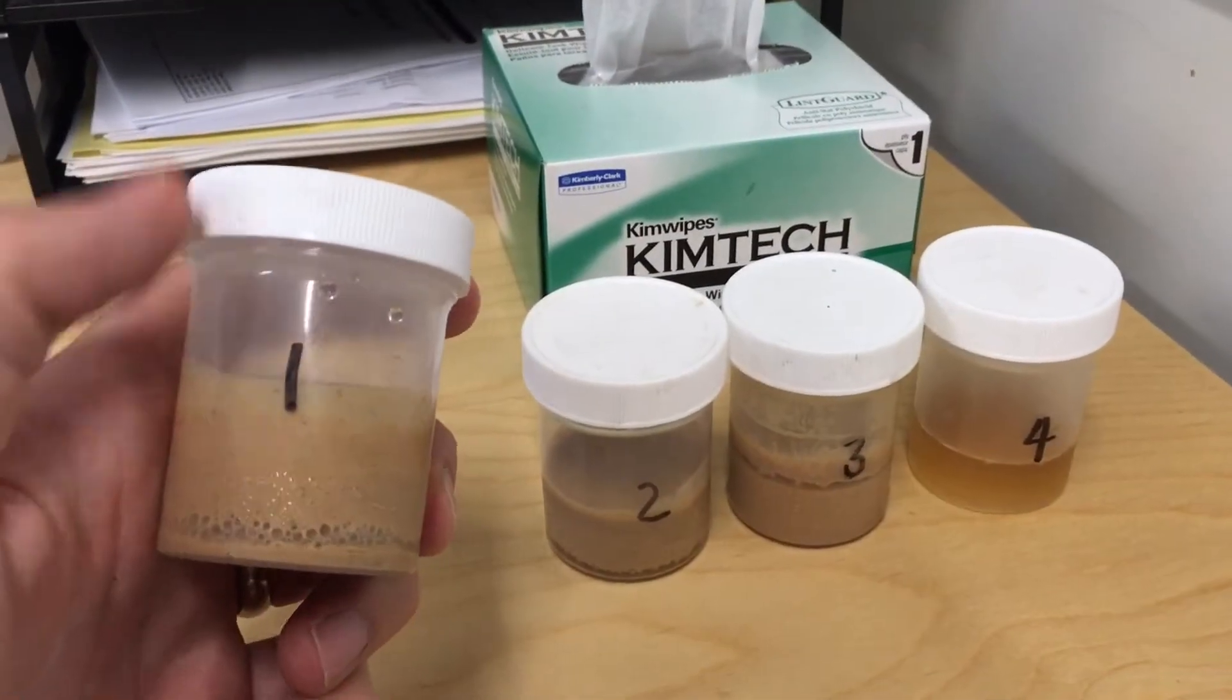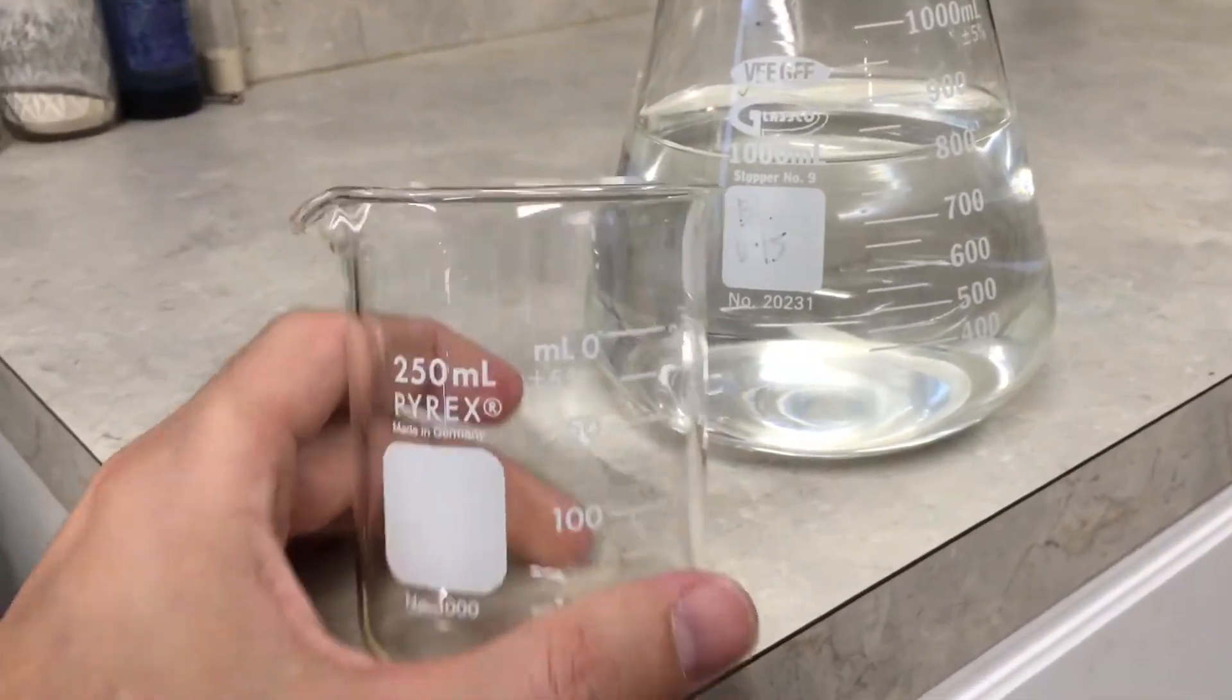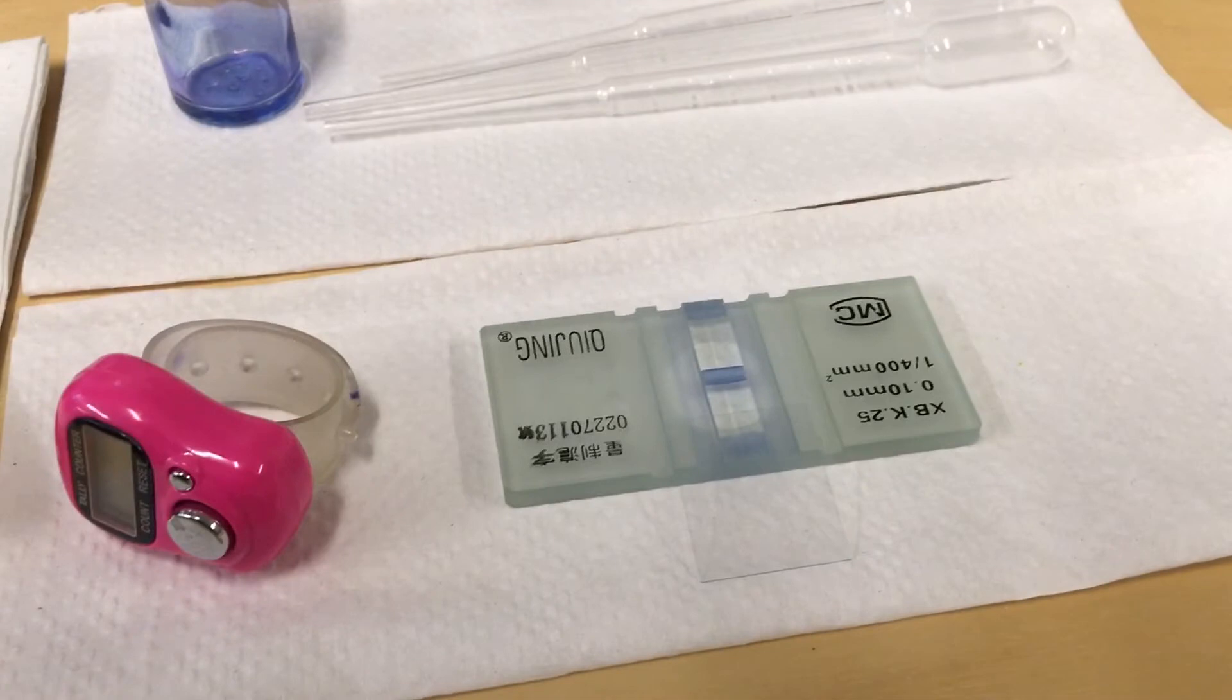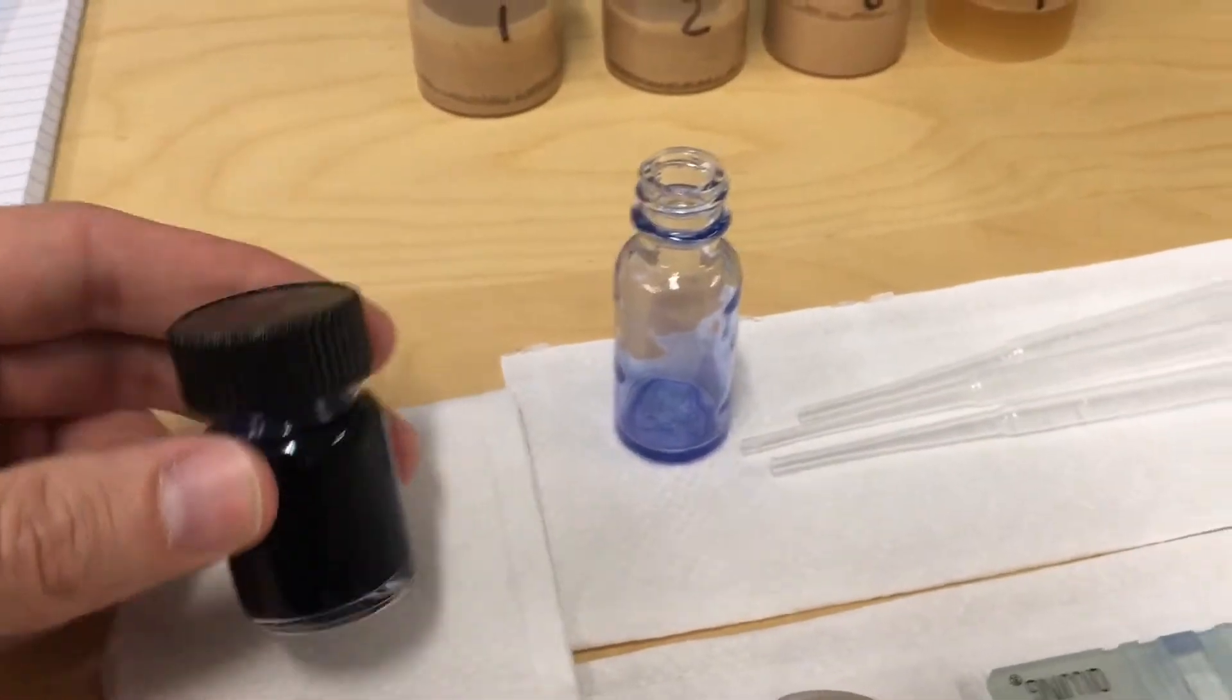So you'll need a sample of your yeast slurry, a beaker for dilution, your hemocytometer, a counter, and some pipettes, and your viability stain.